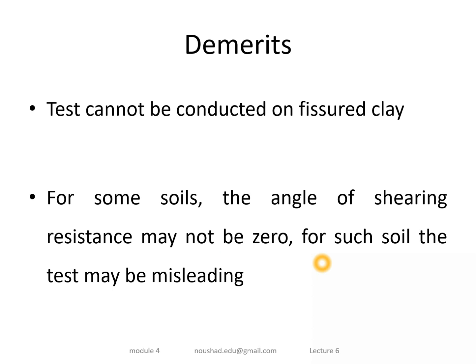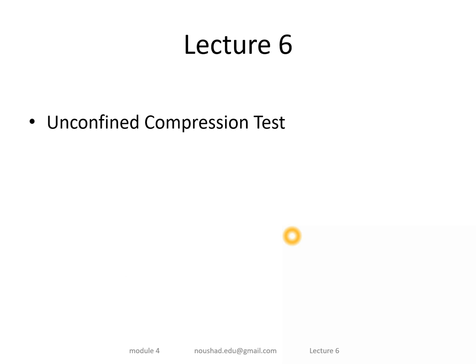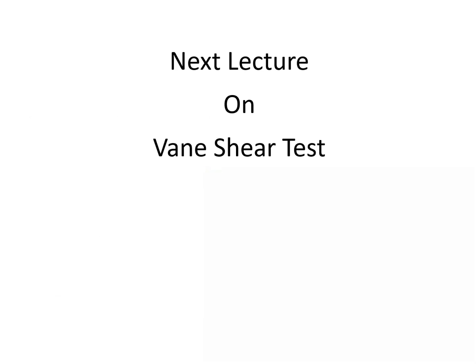In summary, in this lecture we discussed the Unconfined Compression Test (UCC). The UCC test involves axial compressive loading with zero confining pressure, sigma 3 equals zero. We discussed the Mohr circle, failure envelope, and shear parameters — cohesion and friction angle. The unconfined compressive strength Q_u is the major output. In the next lecture we will discuss the Vane Shear Test.